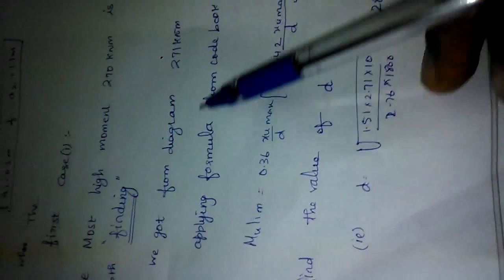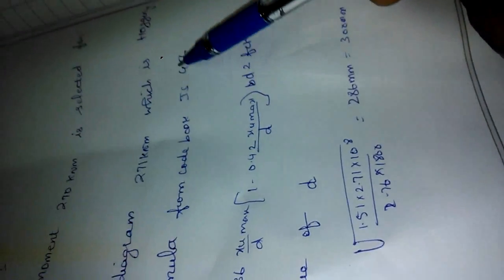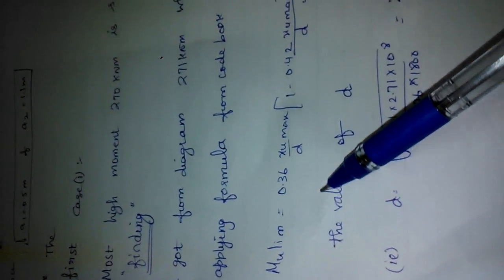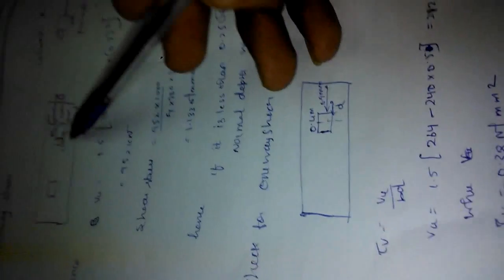So we get diagram 270 which is the moment. We are finding this depth from the moment using the MU limit from IS456 code book. With that you are finding this formula and you are getting the depth required. So after that we have to find punching shear.